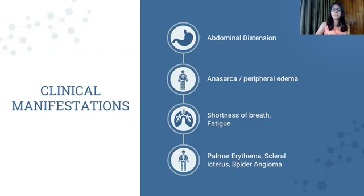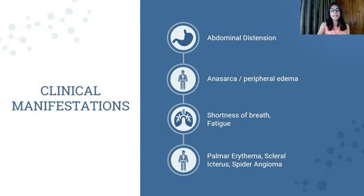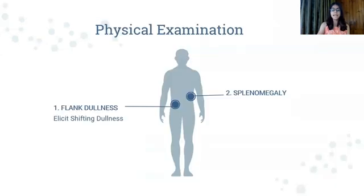The patient may also feel fatigue, weakness, and malnutrition. In cases caused by chronic liver disease, as in the case of liver cirrhosis, you may also see certain stigmata, like palmar erythema, scleral icterus, and spider angiomas.